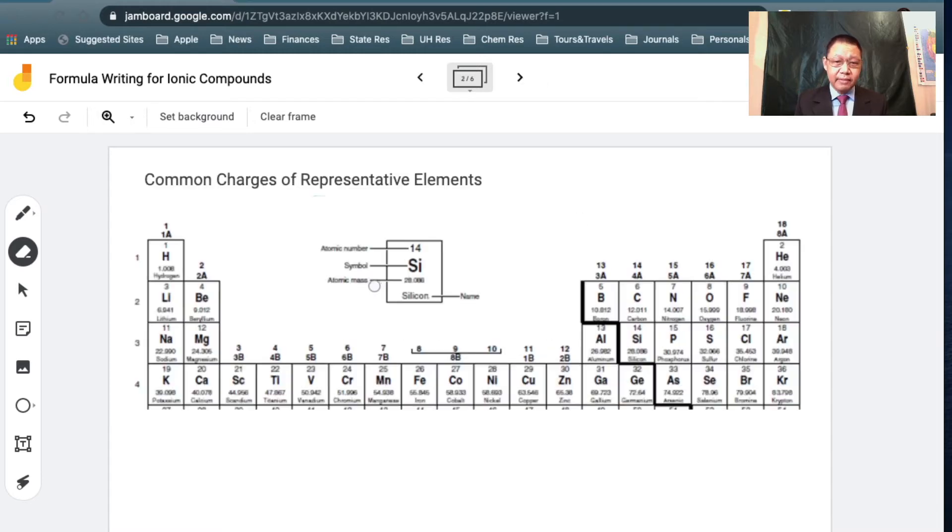To begin with, any meaningful discussion on chemical formulas and chemical compounds will have to find its roots in the periodic table. This is a section of the periodic table. We're going to be focusing on the first two groups and the last six groups, which are called the representative elements.